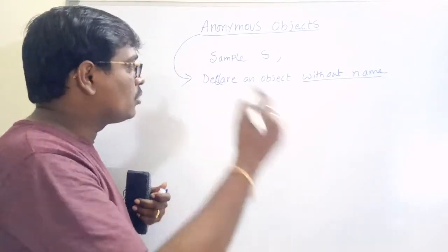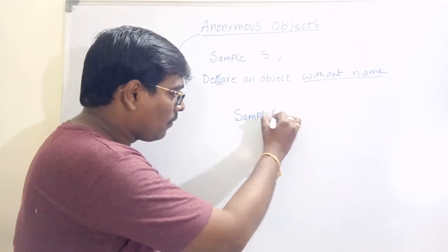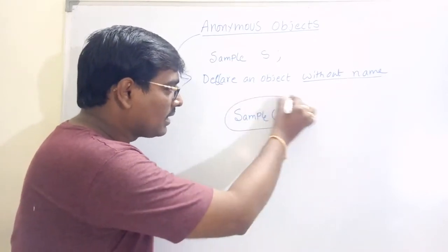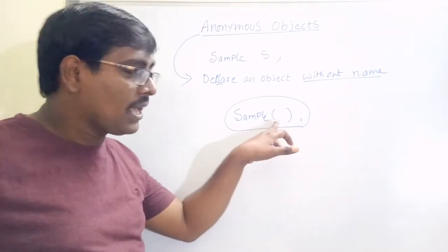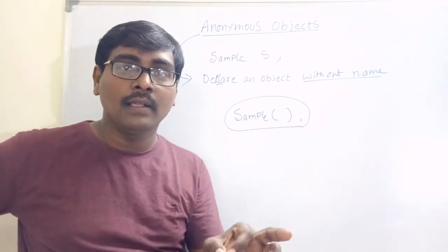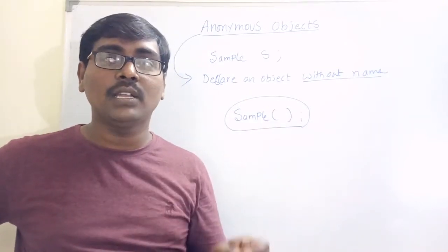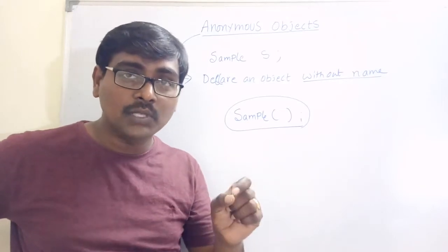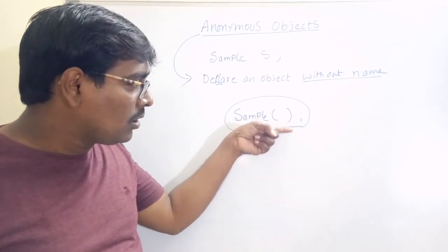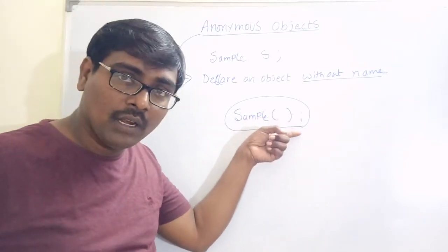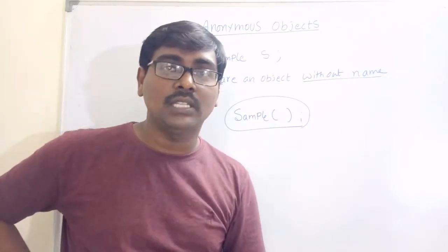Then how can you call it? You can simply write the class name with parentheses — for example, Sample(). An object is created, but remember the point: the object is hidden. Whenever we come out of this statement, the particular object is destroyed automatically.